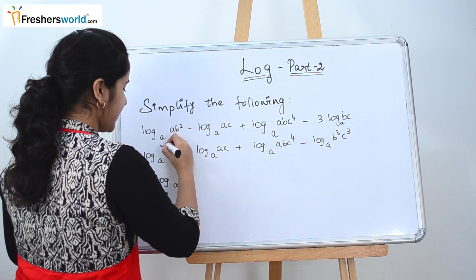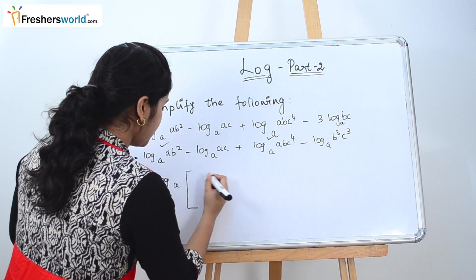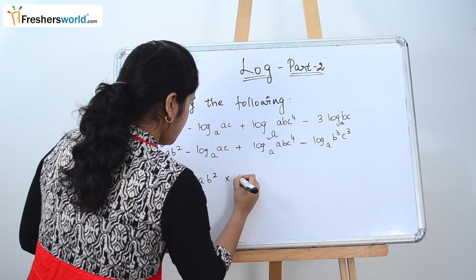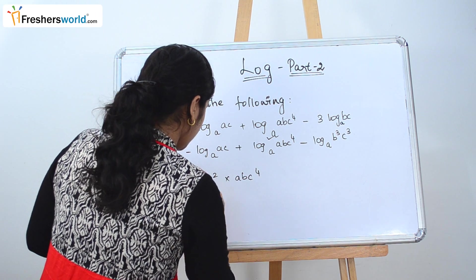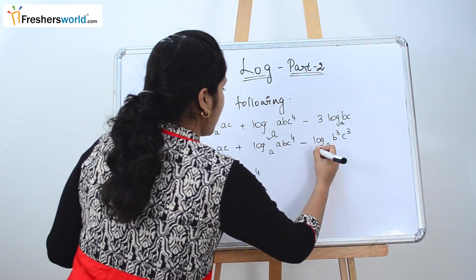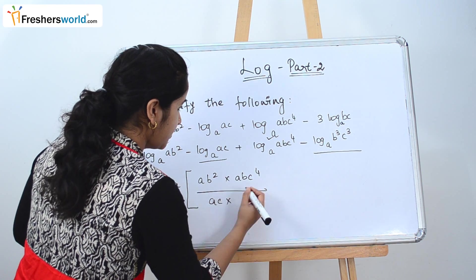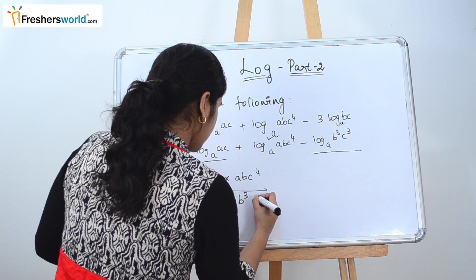So whichever has a plus sign, this one and this one, so it goes in the numerator: ab² × (abc)⁴ divided by these two that have the negative sign, so we take ac × b³c³.